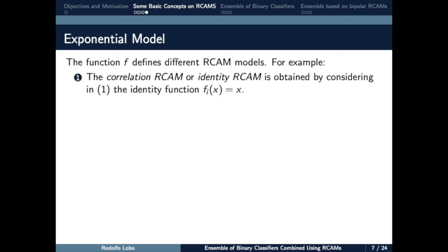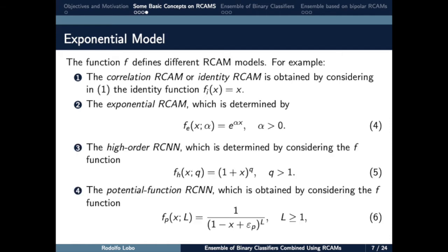We can use the identity function, and in this case we recover the bipolar Hopfield neural network. Also, we can use an exponential function or a potential function. In this work, we use in particular the exponential function given by equation 4.